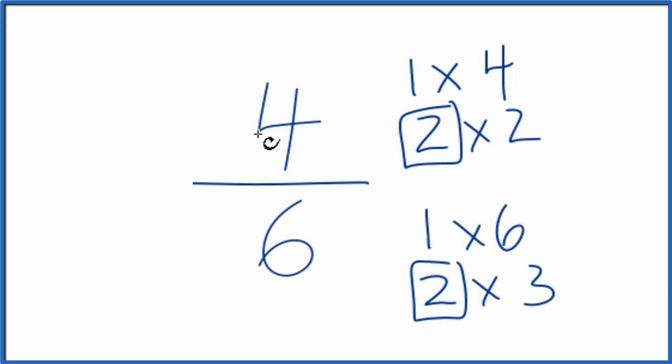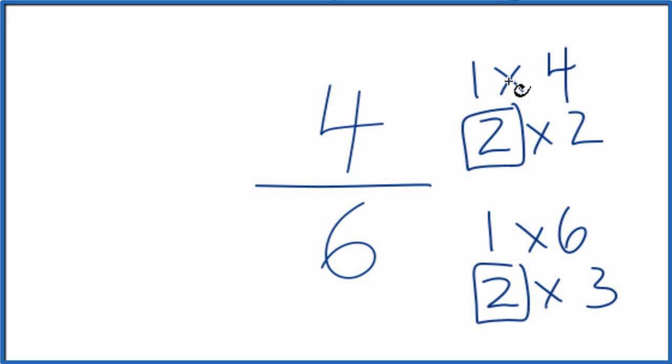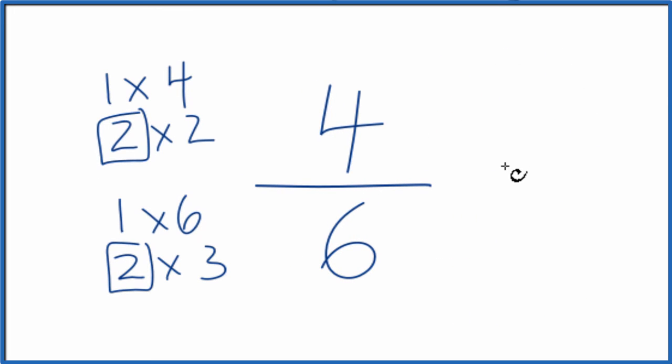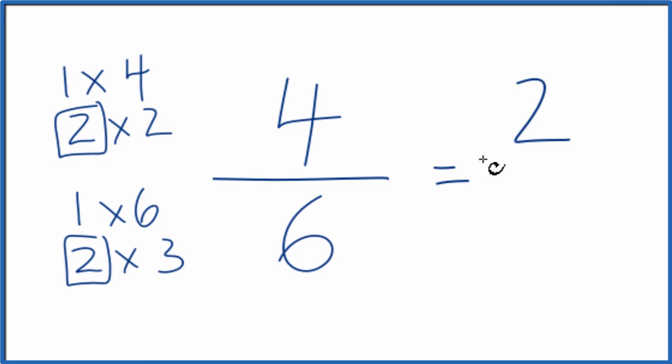So what we'll do is we'll divide 4 by 2 and 6 by 2, and we'll simplify the fraction 4/6. Let's move this over here. So 4 divided by 2, that's just 2, and 6 divided by 2 is 3.